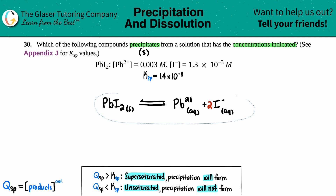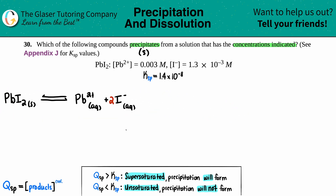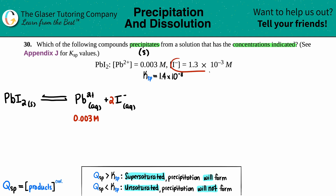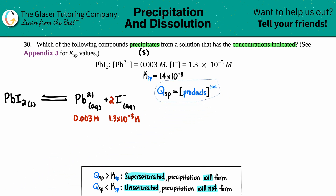Now plugging in the given concentrations: Pb²⁺ is 0.003 M and I⁻ is 1.3×10⁻³ M. Don't be tempted to multiply the iodide concentration by two just because of the coefficient in the balanced equation — that's all the iodine given, so keep it as 1.3×10⁻³ M.